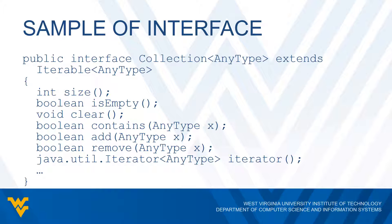Here's some sample code of the collection interface. We have "public interface Collection" and then any type in angle brackets, which extends "Iterable" with any type. This tells us it is a sub-interface of iterable. We can see several abstract methods defined in here: a size method, an isEmpty method, a clear method, a contains method, an add method, a remove method, and what's called an iterator. We'll see later on how an iterator works.